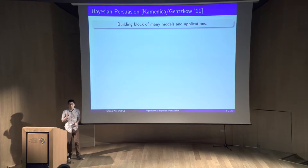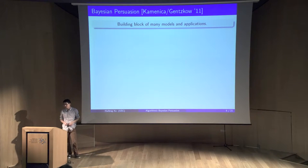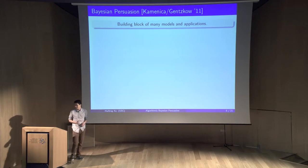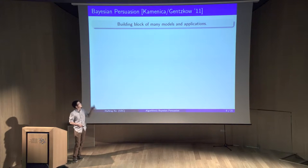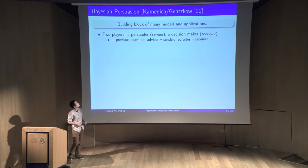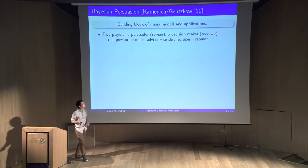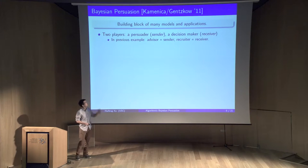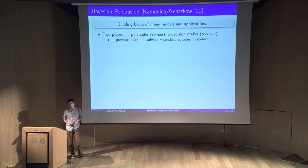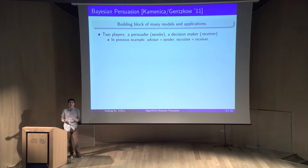In this paper, we focus on one of the most fundamental models in this space: Bayesian persuasion, proposed by Kamenica and Gentzkov, which has been the building block of many models and applications. There are two players: a persuader called the sender, and a decision-maker called the receiver. In the previous example, the sender is the advisor writing the recommendation letter, and the receiver is the recruiter making the hiring decision.